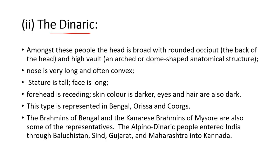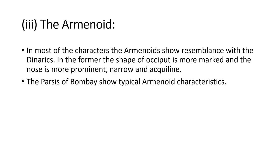Dinarics: the nose is very long, often convex, stature is tall, face is long, forehead is receding, skin color is darker, and eyes and hair are also dark. This type is represented by people of Bengal, Orissa, and Coorg — Brahmins of Bengal fall into this category. Arminoids show resemblance to Dinarics in most features. Parsis of Mumbai show typical Arminoid characteristics — Ratan Tata is cited as a well-known example of a Parsi.